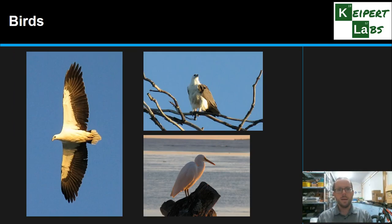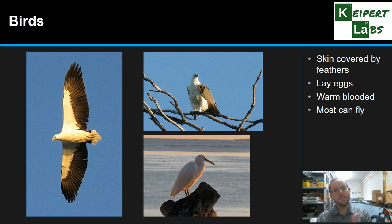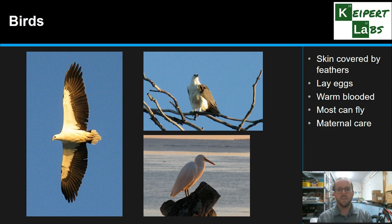After mammals, let's focus on birds. Birds have skin covered by feathers, they lay eggs, and they are warm-blooded — meaning they can regulate their body temperature. Most birds can fly, though obviously not all can. Some are land-based, some are water-based; for example, a penguin can't fly but it can definitely swim. Birds also exhibit maternal care: once the eggs hatch, parents look after the young and feed them until they're old enough to survive on their own.